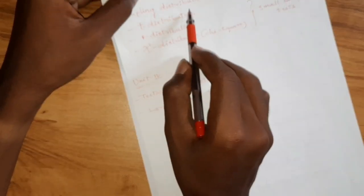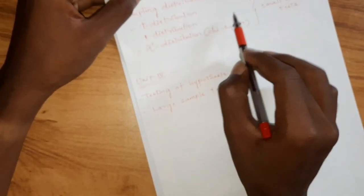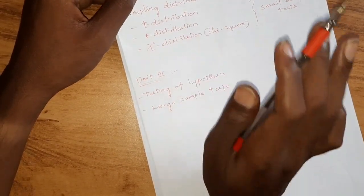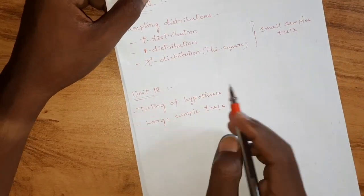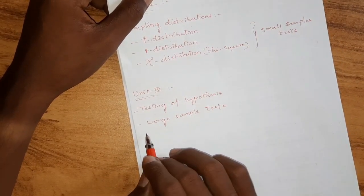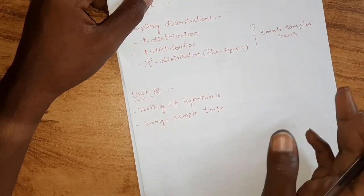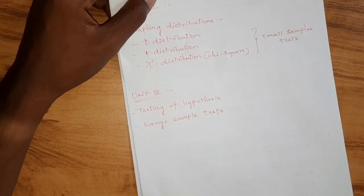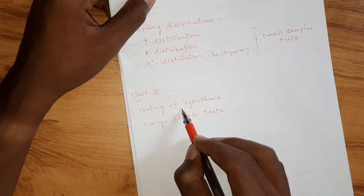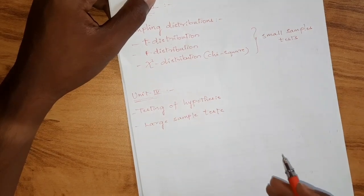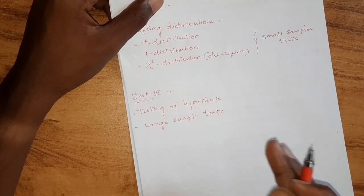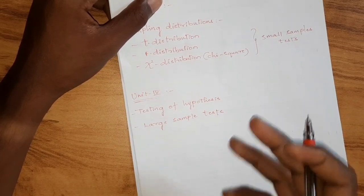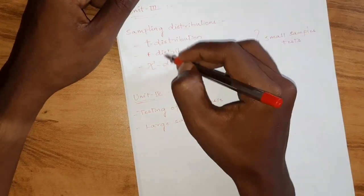In Unit 3, Sampling Distributions: if you have small sample tests, we cover T Distribution, F Distribution, and Chi-Square Distribution. Unit 4 covers Testing of Hypothesis and large sample tests — there is a procedure for applying these problems with example problems. Different types of tests are important, and distributions in Unit 3 are very, very important. Expect 2 to 3 compulsory questions from these very important topics.